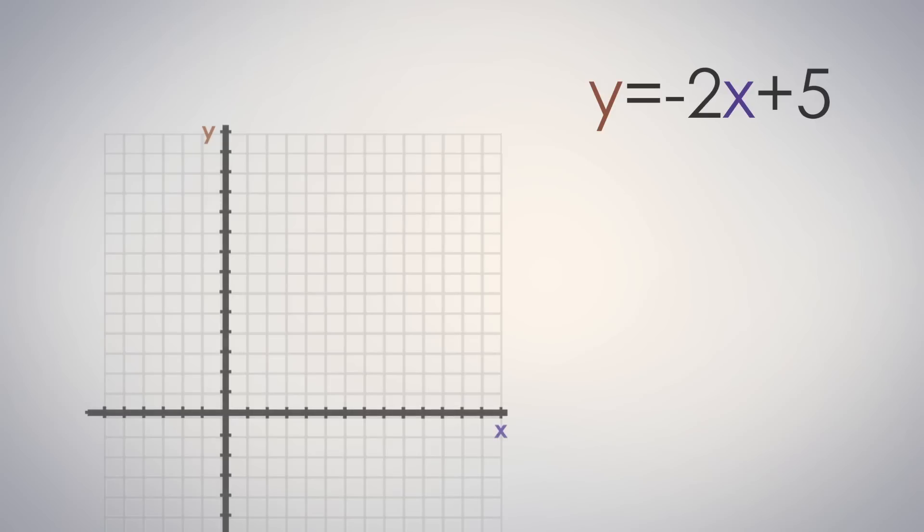So as you can see, the slope here is negative 2, and the y-intercept is 0, 5.